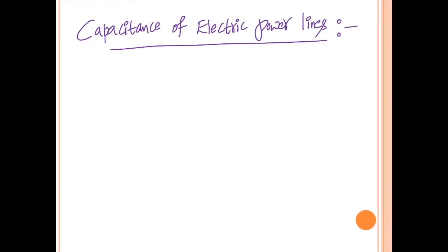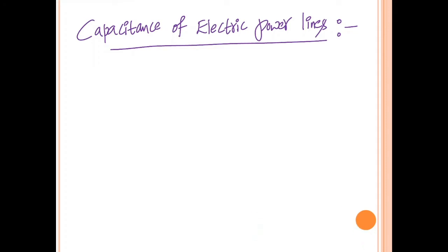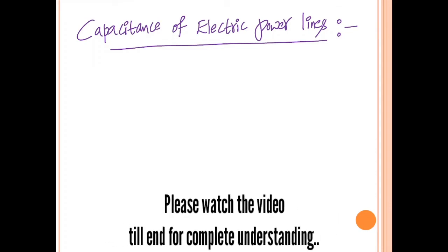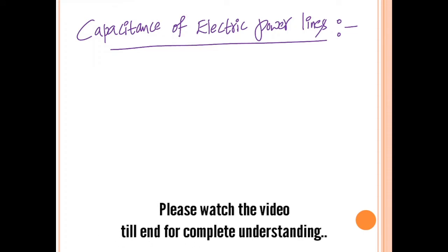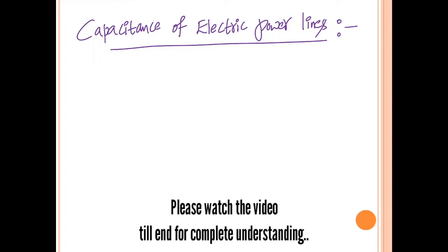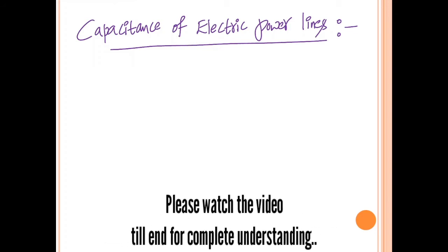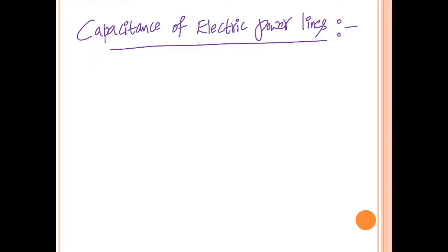Hi friends. Up to the last video we devoted our discussion to the inductance of electric power lines. Now we'll start with another parameter of transmission lines which is called the capacitance of electric power lines. Up to now we have covered two different parameters: the resistance of transmission lines and also the inductance of transmission lines. From this video onwards we will start our discussion on capacitance of electric power lines.